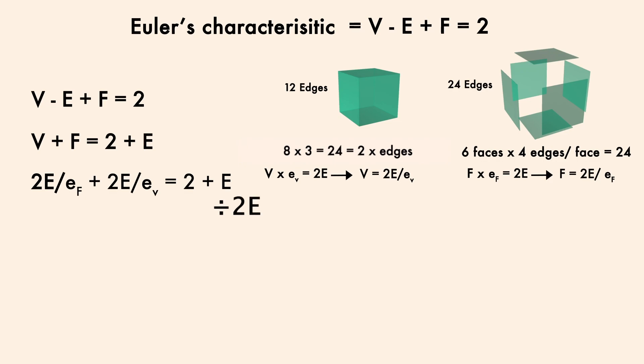If we divide both sides by 2E, we get 1 over the edges per face, plus 1 over the edges touching each vertex, equals 1 half plus 1 over the total number of edges.